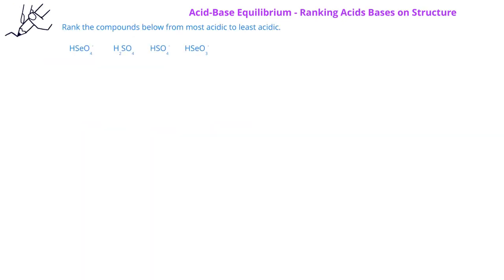In this problem, we're asked to rank the compounds from most to least acidic. We have HSeO4-, H2SO4, HSO4-, and HSeO3-. We can begin by trying to identify which ones might be most acidic. If we look at the charge, we could see that H2SO4 would be more acidic than HSO4- because H2SO4 is neutral.